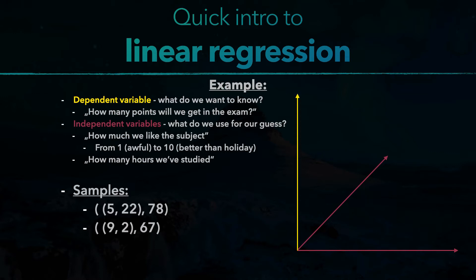We can draw them in our coordinate system. The first sample is, we give the subject a liking of 5, we studied 22 hours, so we moved 22 points in x2 direction, and we had 78 points in the exam, so we moved up to 78. And this is our first sample point. The second one, liking of 9 but only 2 hours studied, 67 points in the exam.